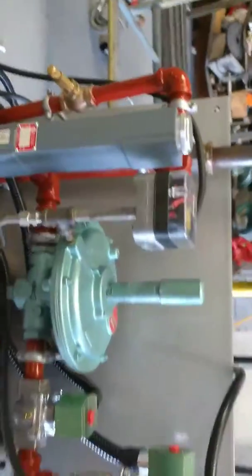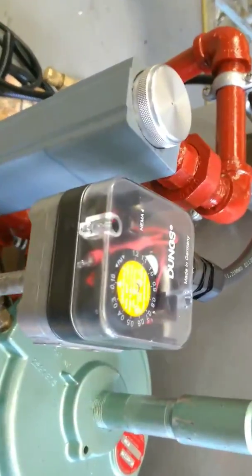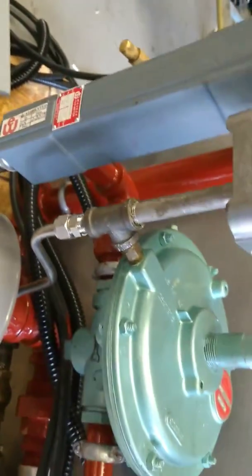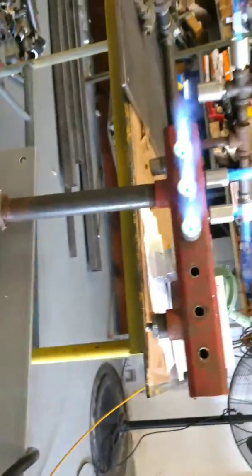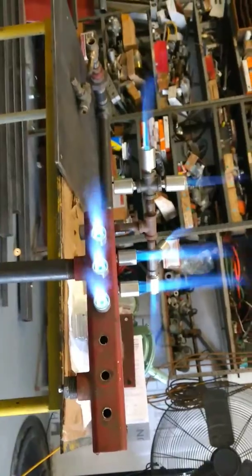That's the pressure switch for the impulse line to make sure that we have air before we try to start it, and there are 10 burners.